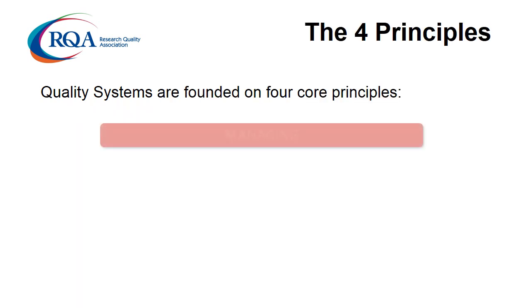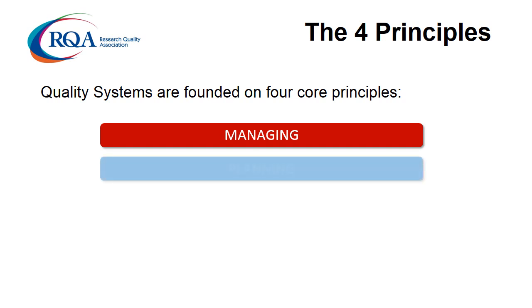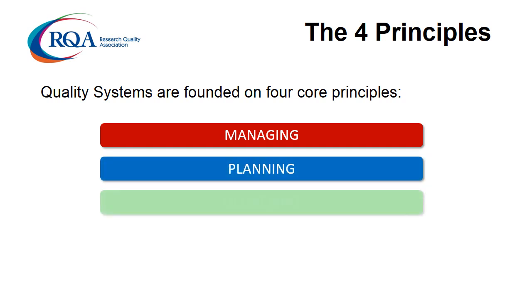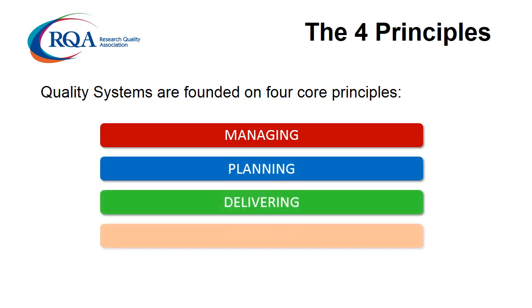Quality systems are founded on four core principles: Managing, Planning, Delivering and Measuring.